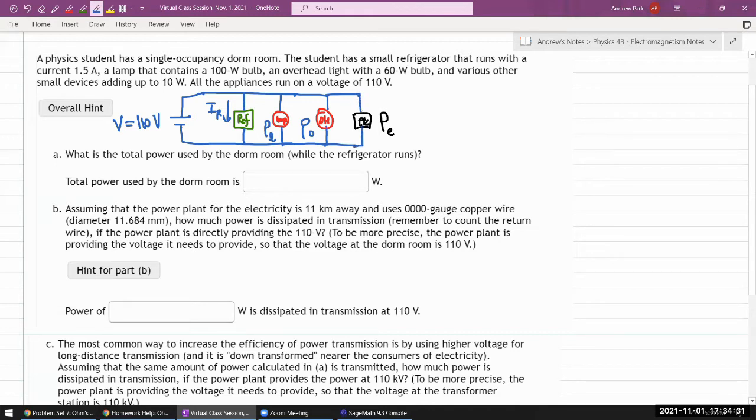So that's the basic arrangement here. So part A asks, what is the total power used by the dorm room while the refrigerator runs? And it looks like I'm being given all the numbers, all the other numbers in terms of the power. So I need to calculate the power used by the refrigerator. And for that, you use the basic relationship between electrical power, voltage, and current, which is electrical power is current times voltage.